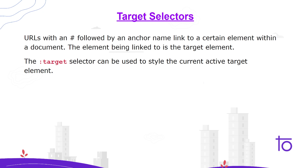Target selectors are basically URLs with a hashtag followed by an anchor name linked to a certain element. So if we are naming our elements with a hashtag followed by the name of that particular element which we want to target, then the target selector comes into place. To use it, we need to write colon and target, and then give the properties and values inside curly brackets.